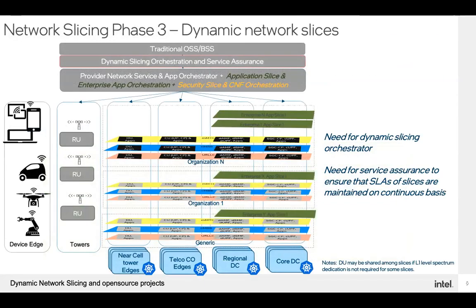In this picture, at the bottom we have generic slices coming from the provider itself. Different organizations — shown as Organization 1 and Organization N — are getting three slices from the provider. Those organizations in turn provide services to enterprises via enterprise app slices. In this complex environment, you really require a dynamic slicing orchestrator and service assurance to ensure that SLAs of these slices are continuously maintained across many traffic scenarios.